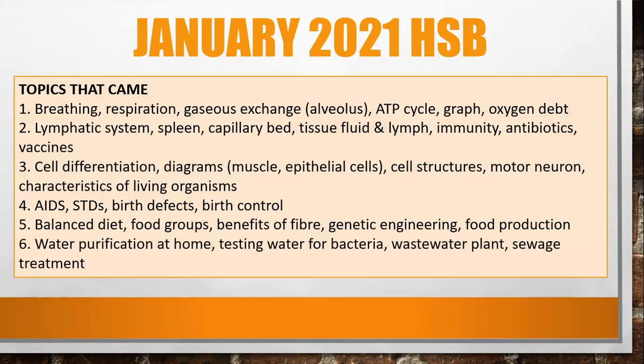The last question was on water purification in the home, testing water for bacteria, and how water can get contaminated. They also looked at the breakdown of wastewater at a wastewater facility, the health problems associated with that, and finishing off with sewage treatment methods. That was the January 2021 human and social biology paper.